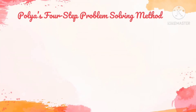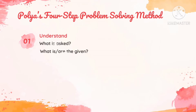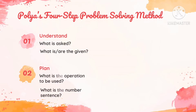In Solving Routine Problems, we're going to use POLYA's 4-Step Problem Solving Method. These are the following steps. Step 1, we're going to understand the problem by answering what is asked and what are the given numbers. The second step is to plan — we're going to plan for the operation to be used and what is the number sentence.